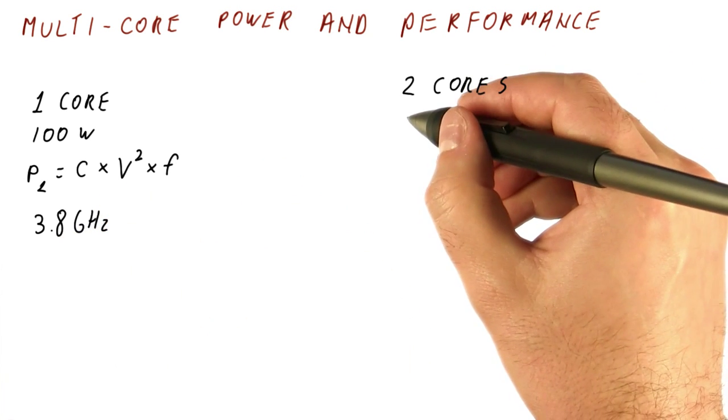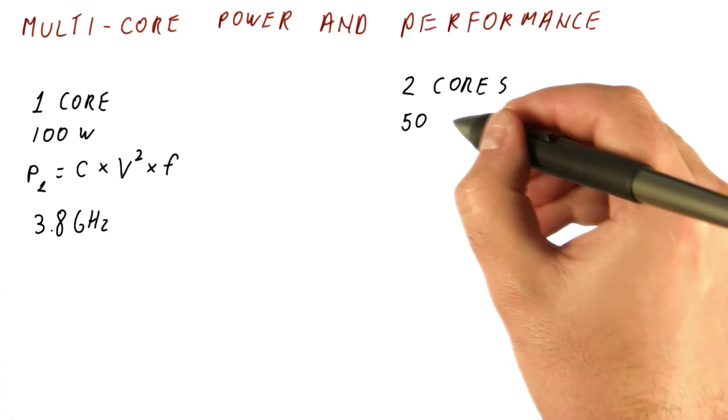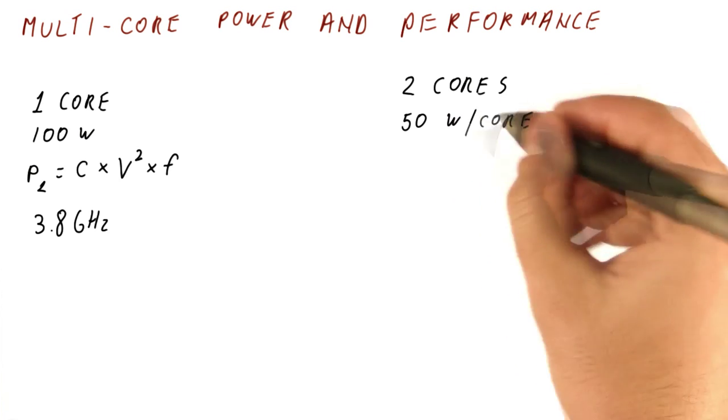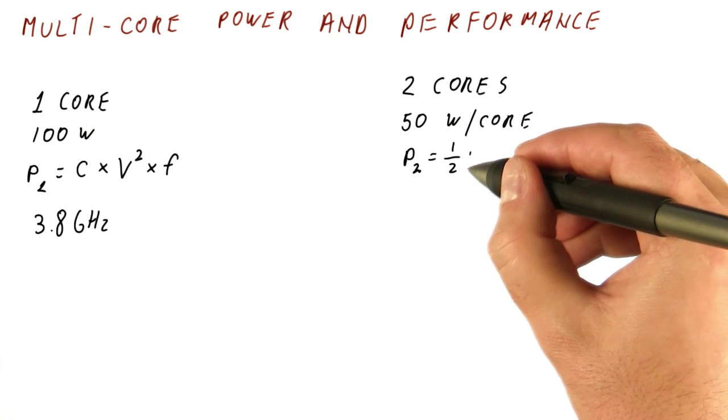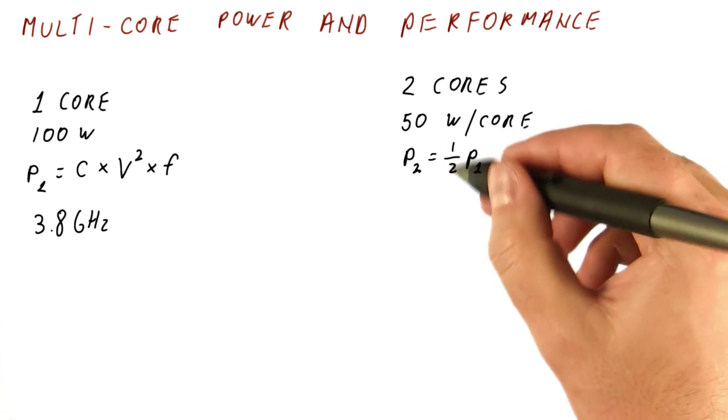Now let's say that we get two cores. In that case, each gets half the power budget of the chip. The per-core power in the two-core case is one-half of the single core's power.